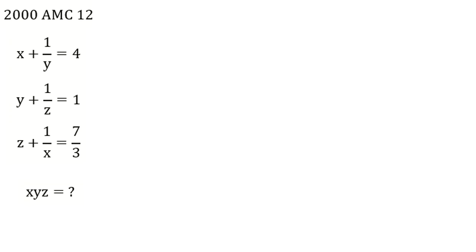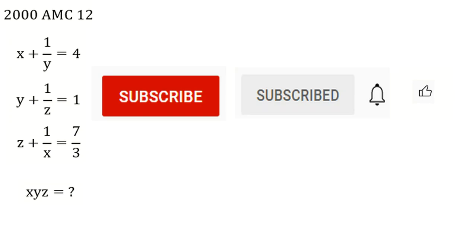We are going to solve this AMC problem for 2000: x plus 1 over y equals 4, y plus 1 over z equals 1, z plus 1 over x equals 7 over 3. What does x times y times z equal?